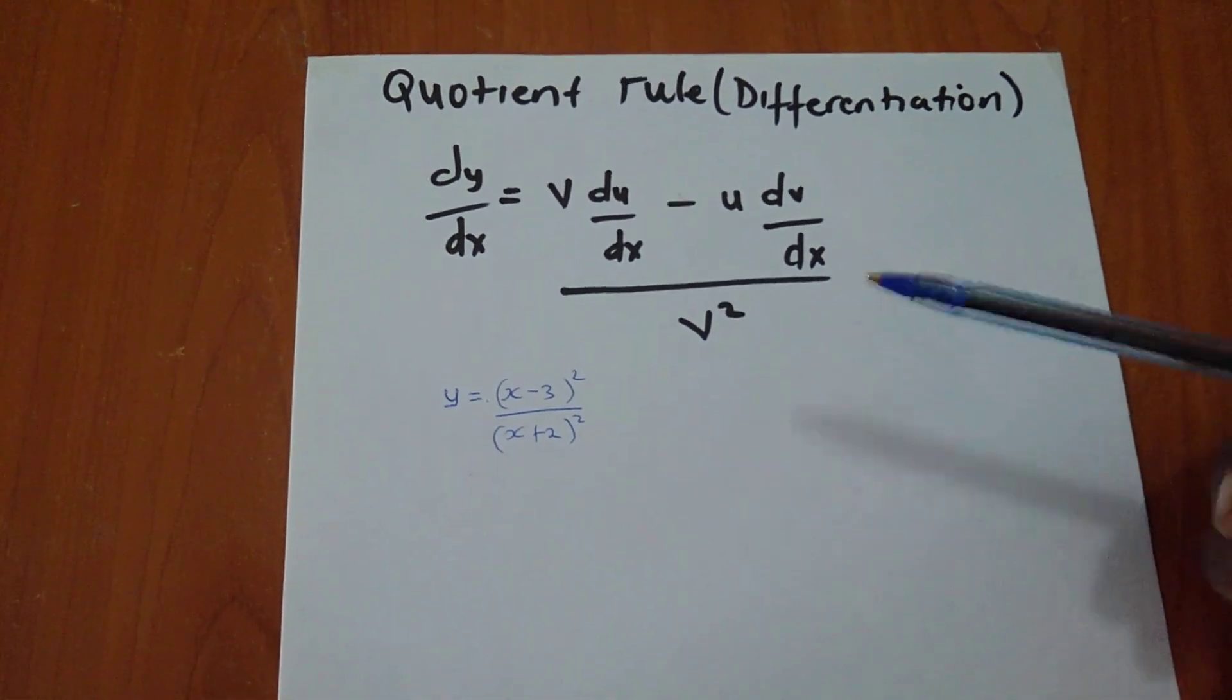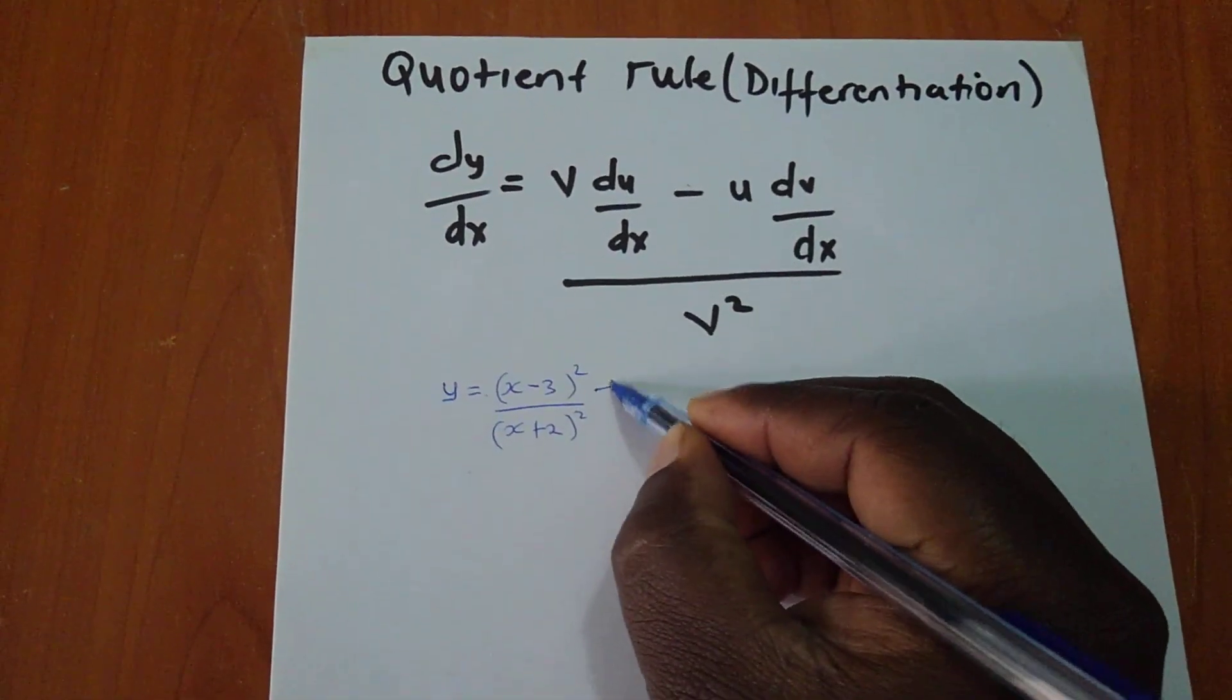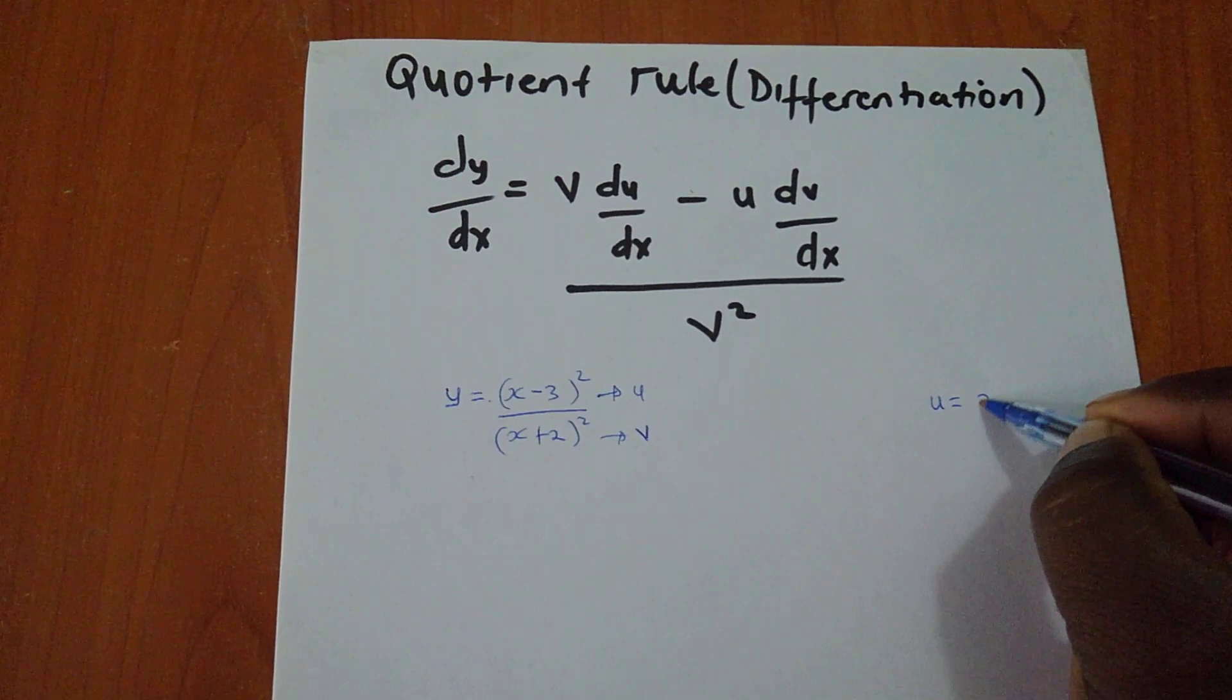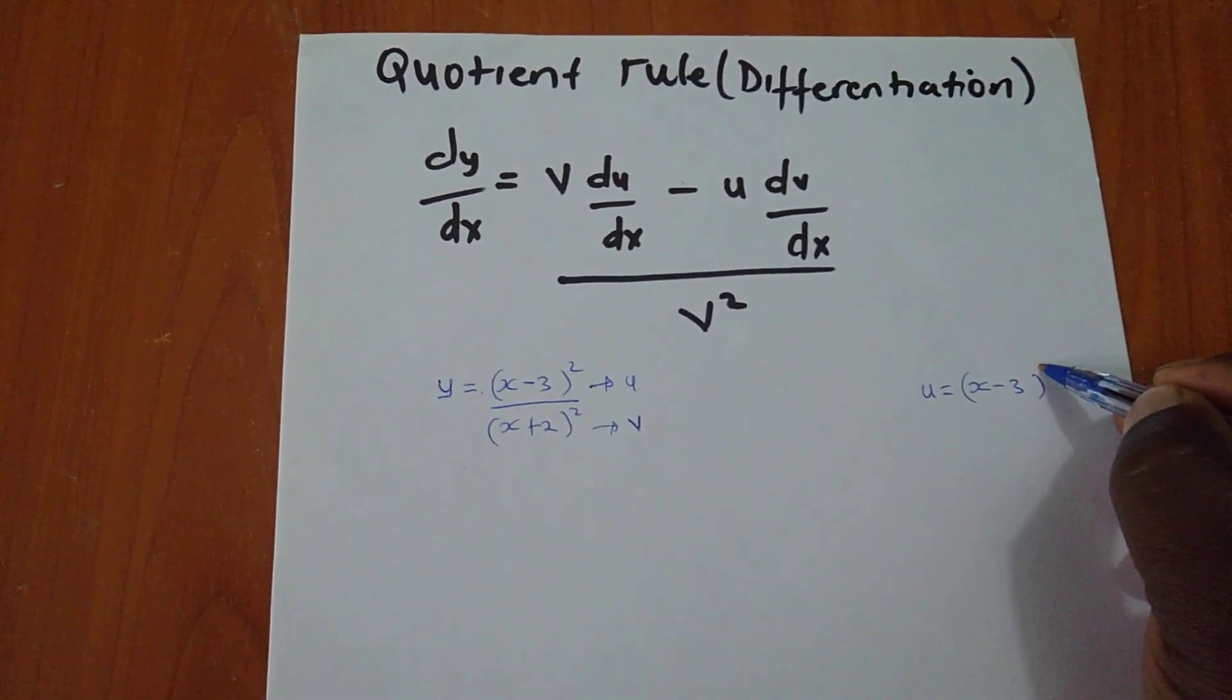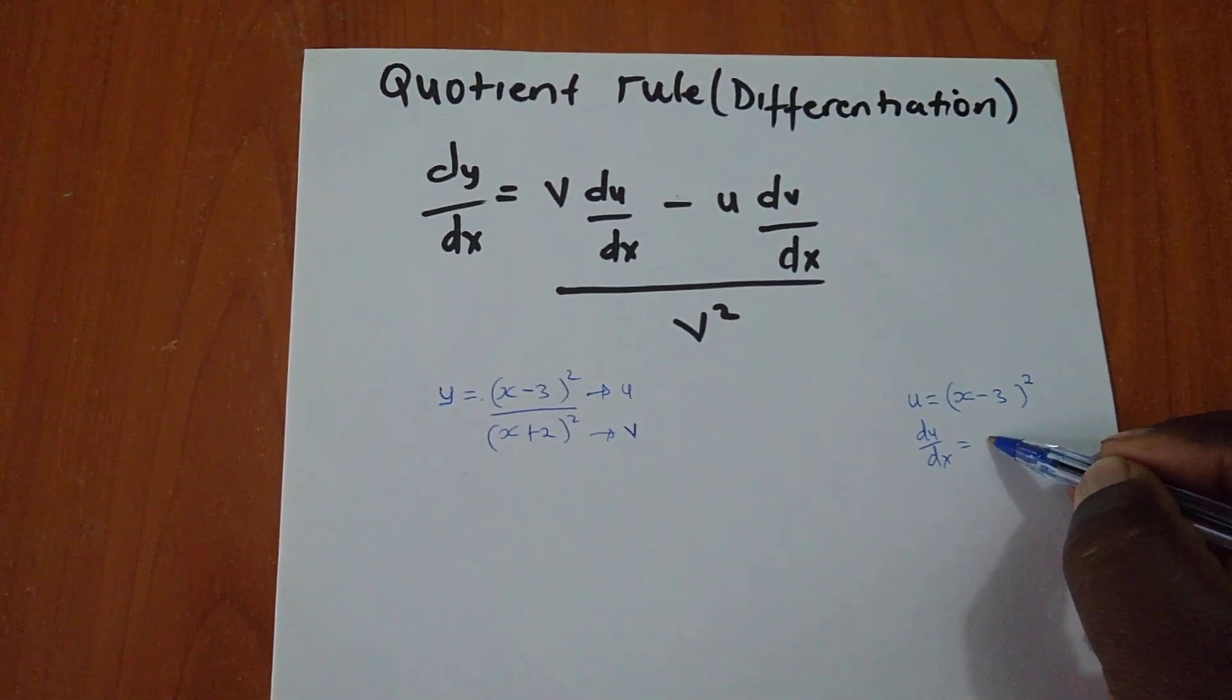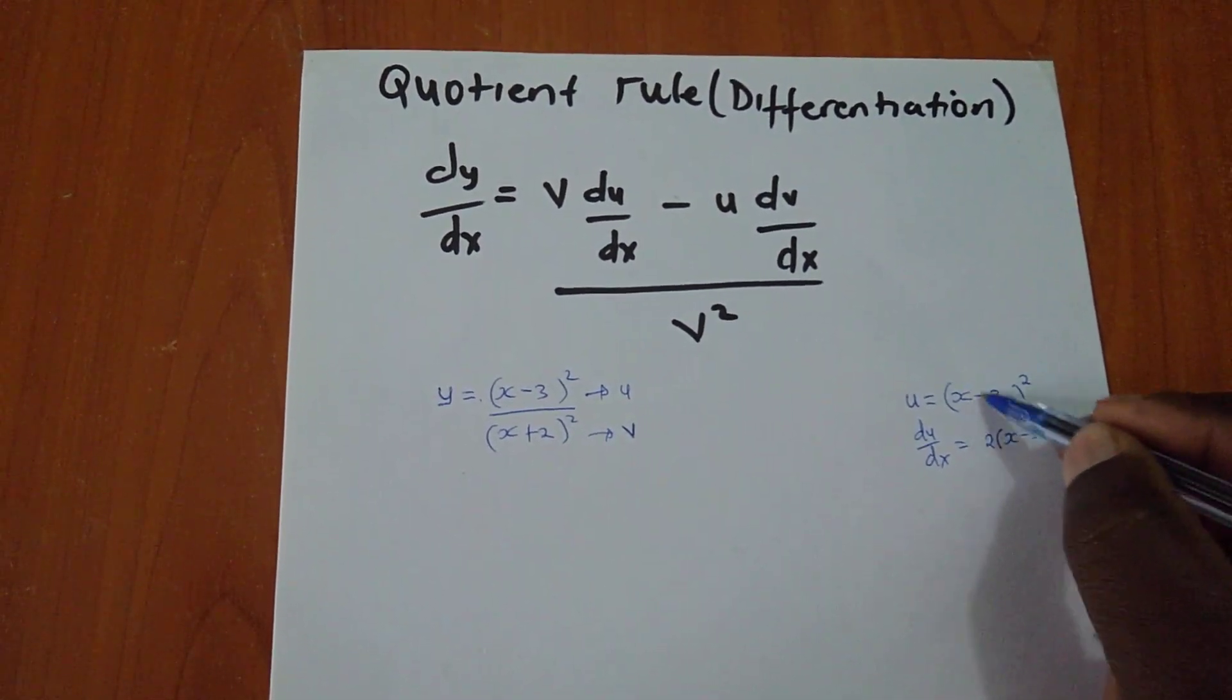As I told you, first identify - let this upper one be my u and this denominator be my v. So having u as (x minus 3) to power 2, my du/dx will actually equal to 2 times (x minus 3). If you differentiate the bracket only, I will get one.